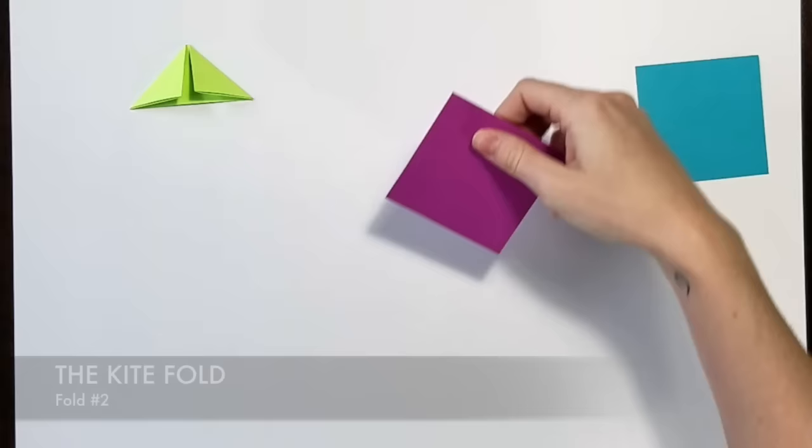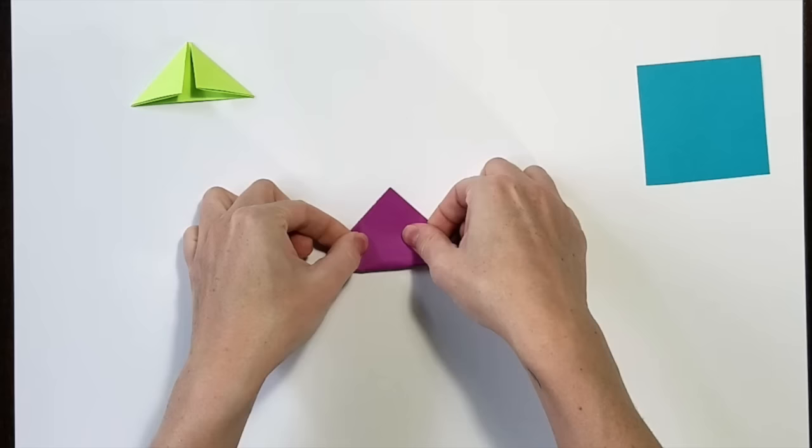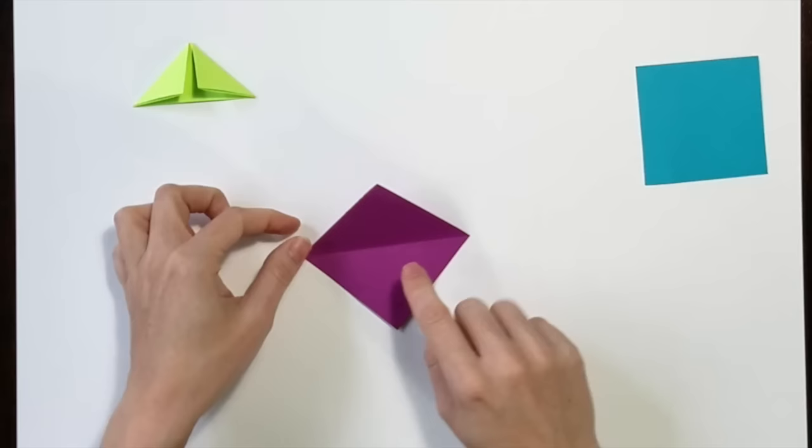Now the next one I'm going to do is the kite fold. I'm going to start with my piece of paper and fold it in half diagonally. I'm going to line up my corner, make a crease and open it up. I can see my crease line right here in the center.